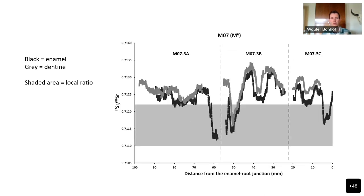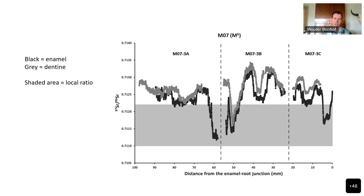We have a similar result for the M6 — the last huge molar of this mammoth — which was split into three pieces. Again, both the dentine and the enamel show very much non-local strontium isotope ratios, with slightly different phases, but both show very clear peaks and troughs occurring at similar rates and at the same distances.